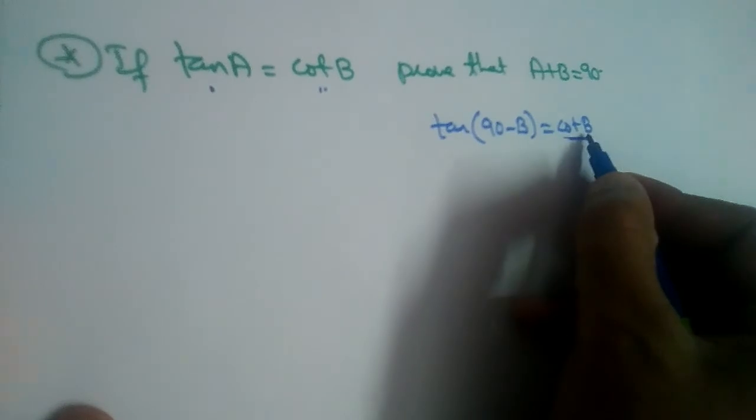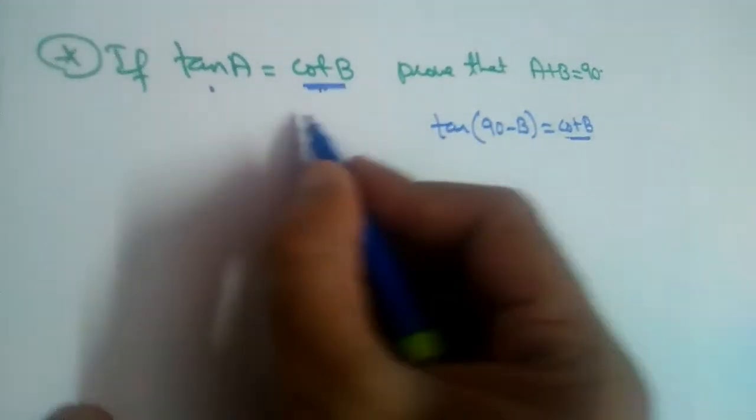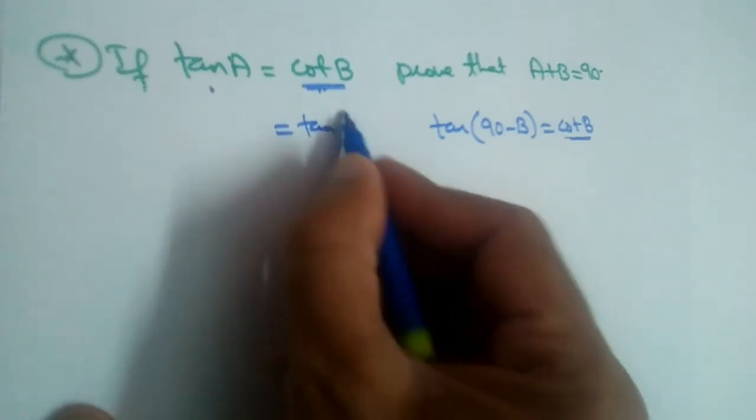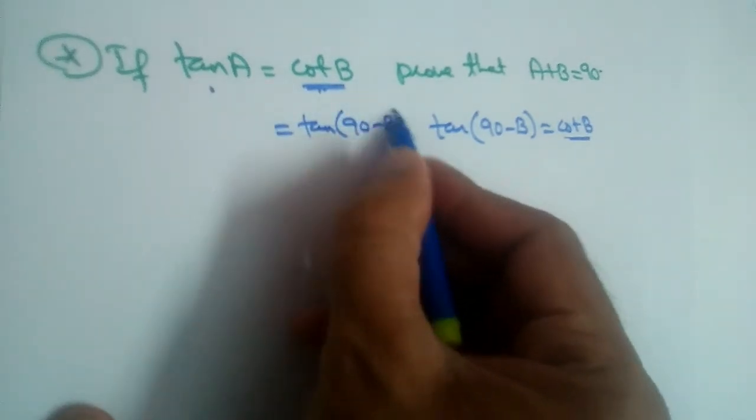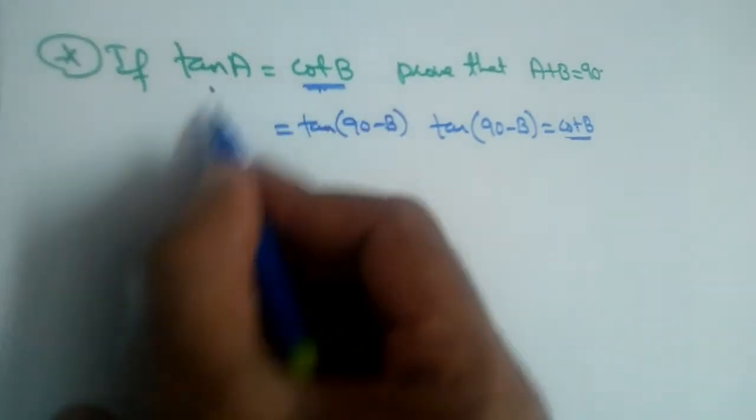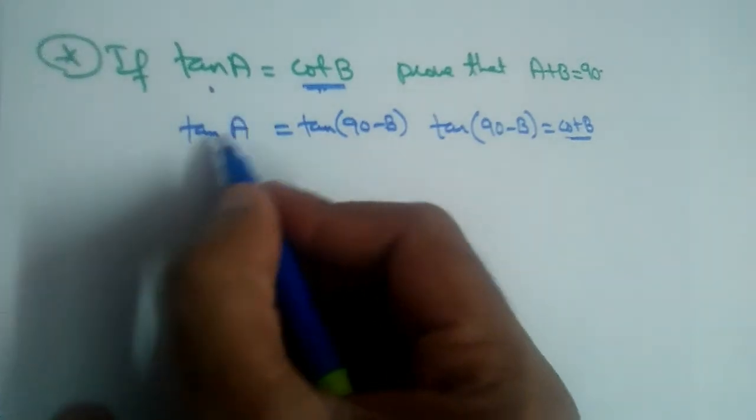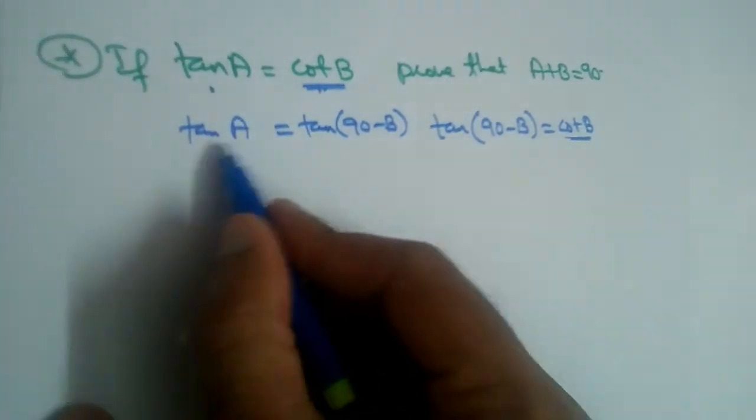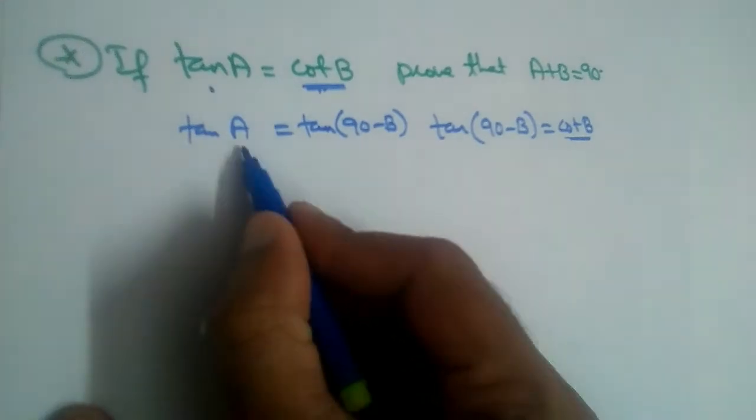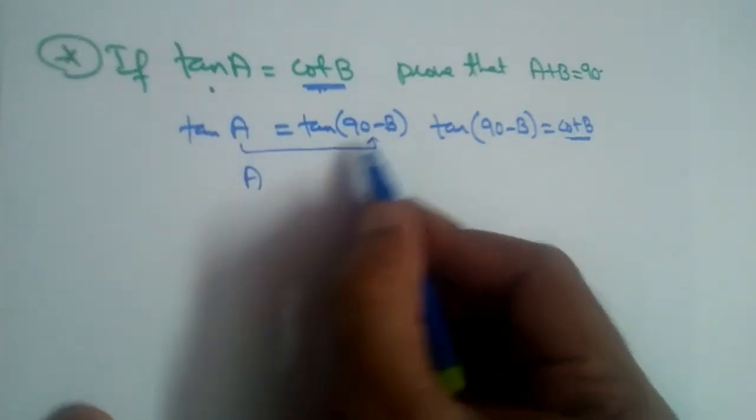Yes, of course we can. So tan(90-B) is equal to cot B, so this is tan A as it is on LHS. Both are tan and tan, so that means this angle A should be equal to 90 minus B.